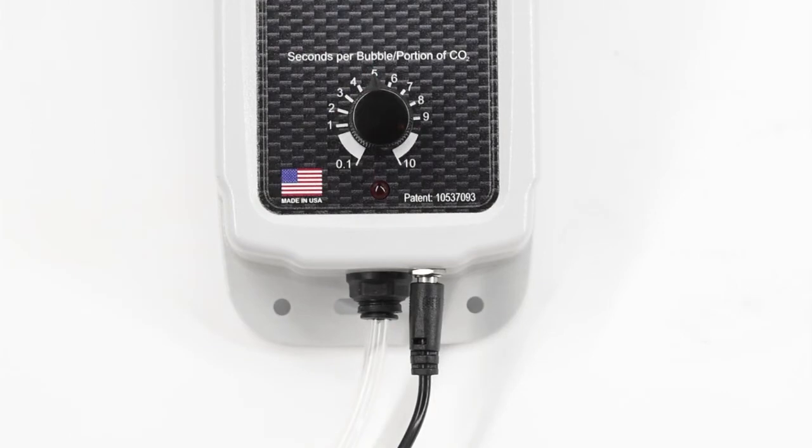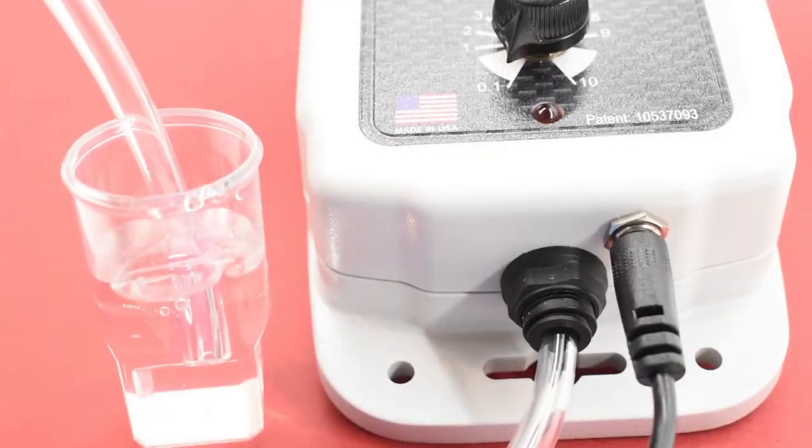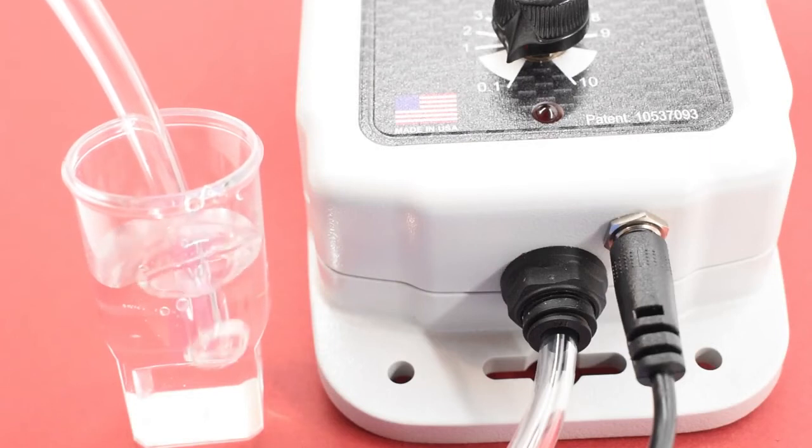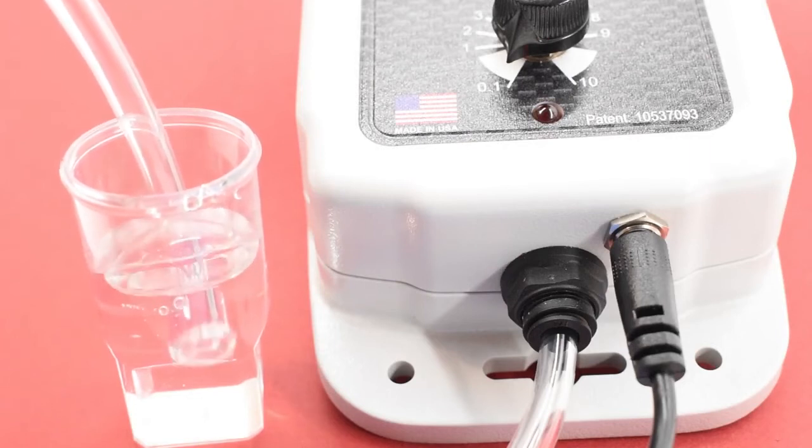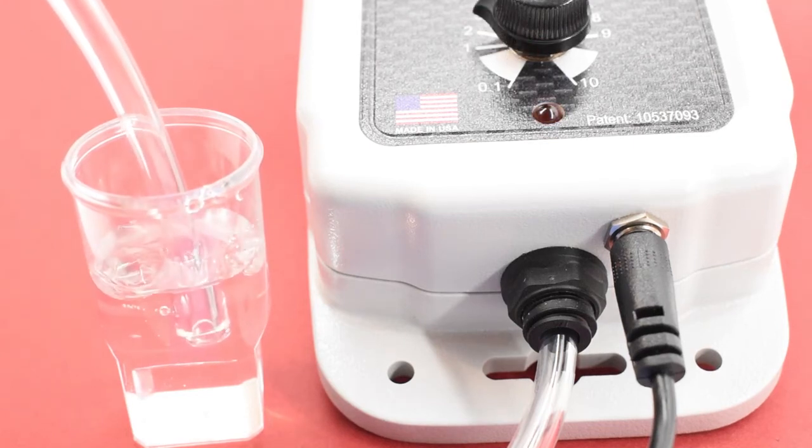Your carbon doser is now set up. It will consistently and accurately dose the same amount of CO2 until you need to make an adjustment, whether the rate is very fast, as shown here, or very slow, as shown here.